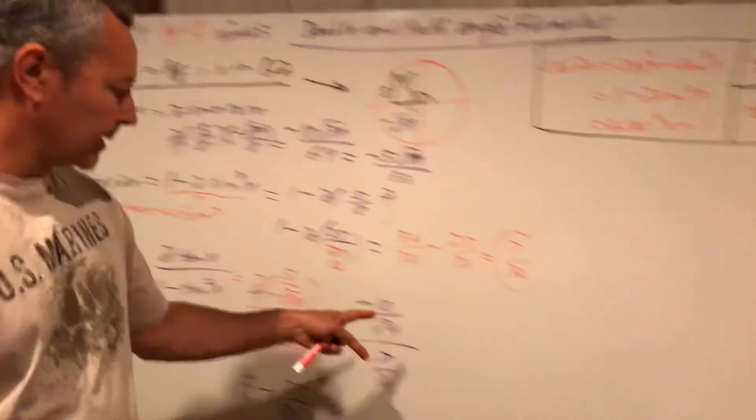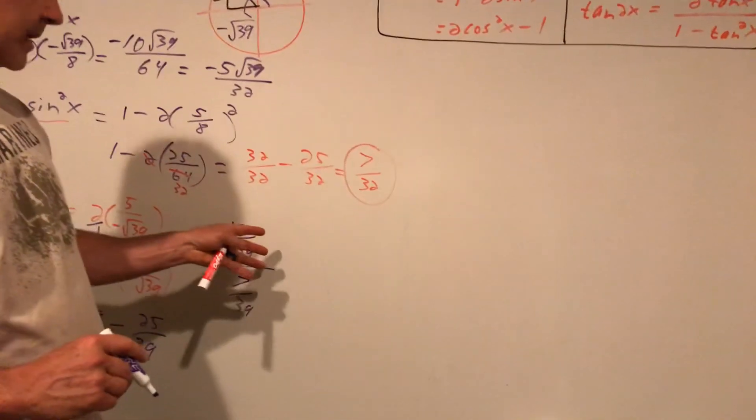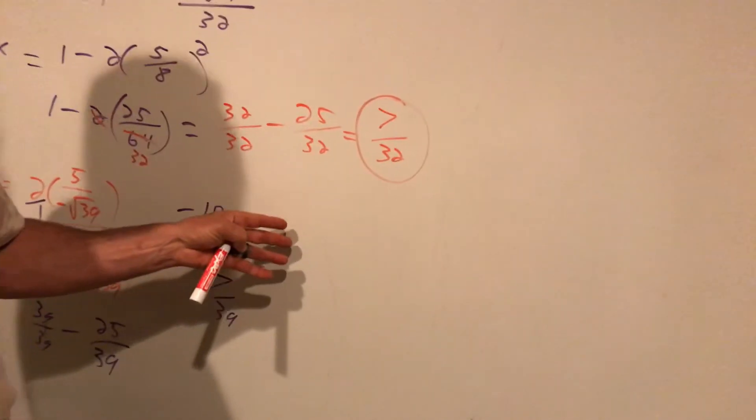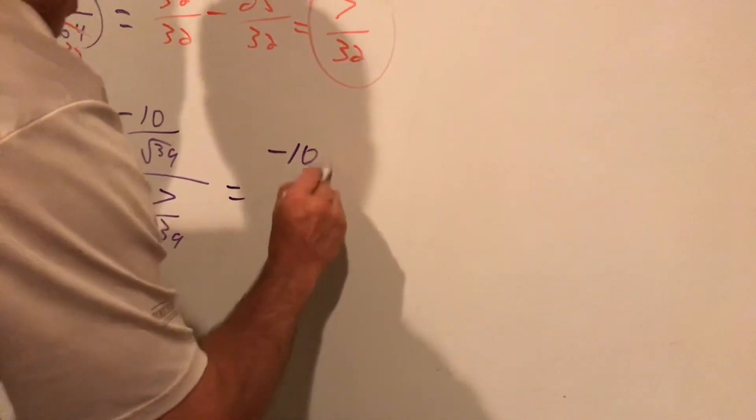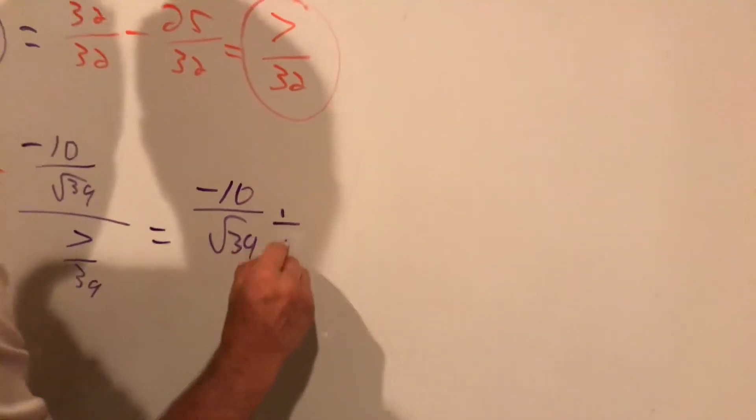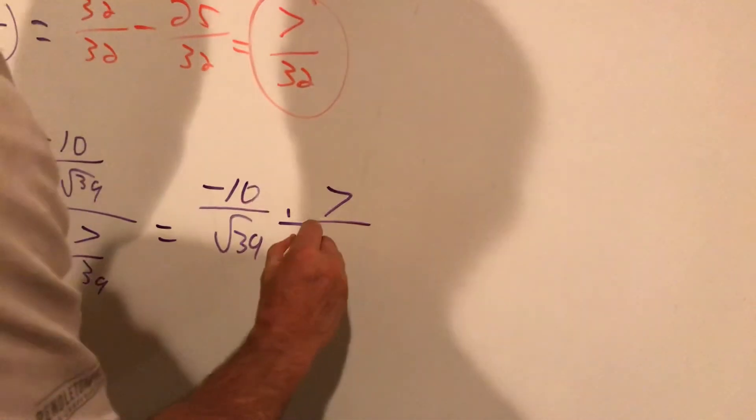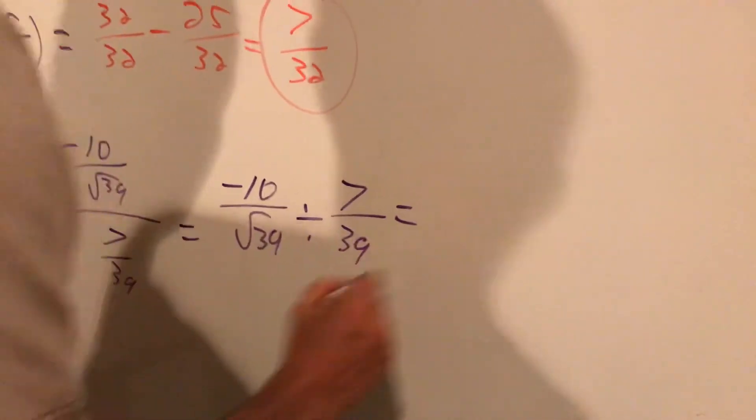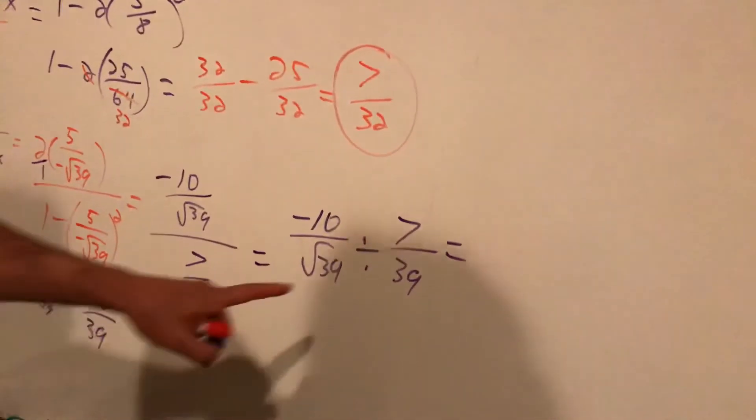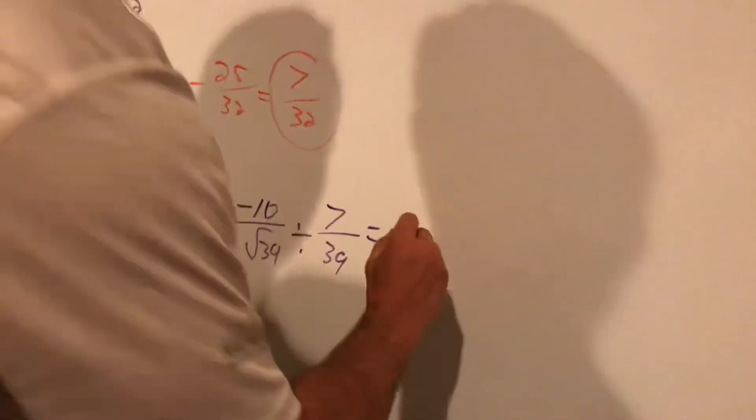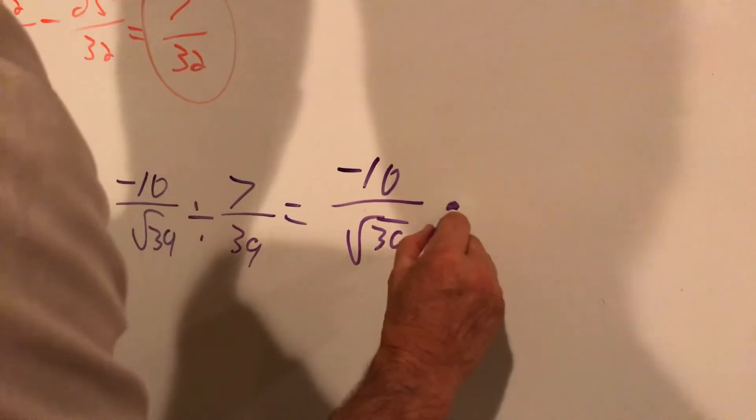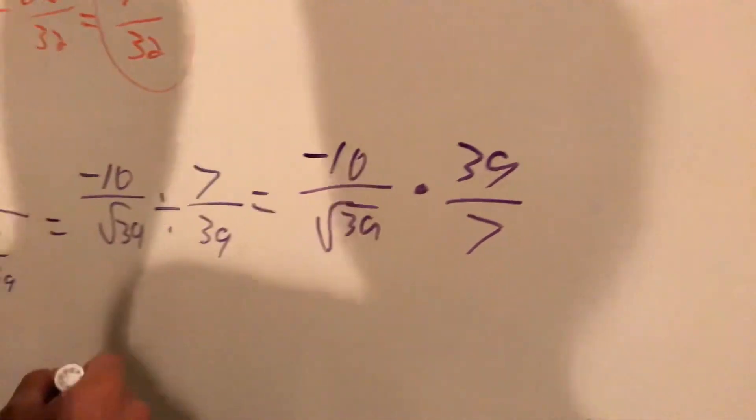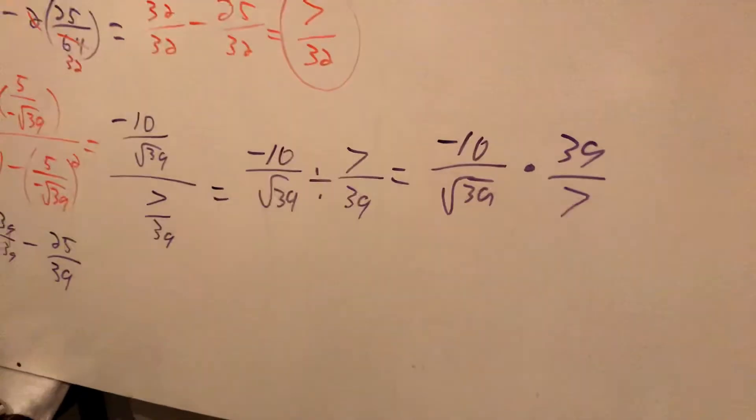And this particular one, I like to just clean it up here, but this particular one will be easy for you to see what you need to clean up by writing out the long version. This is negative 10 over root 39 divided by 7 over 39. As you know, for fractions, when I divide, I'm going to flip the second one and multiply. This is negative 10 over root 39, multiplied by 39 over 7.